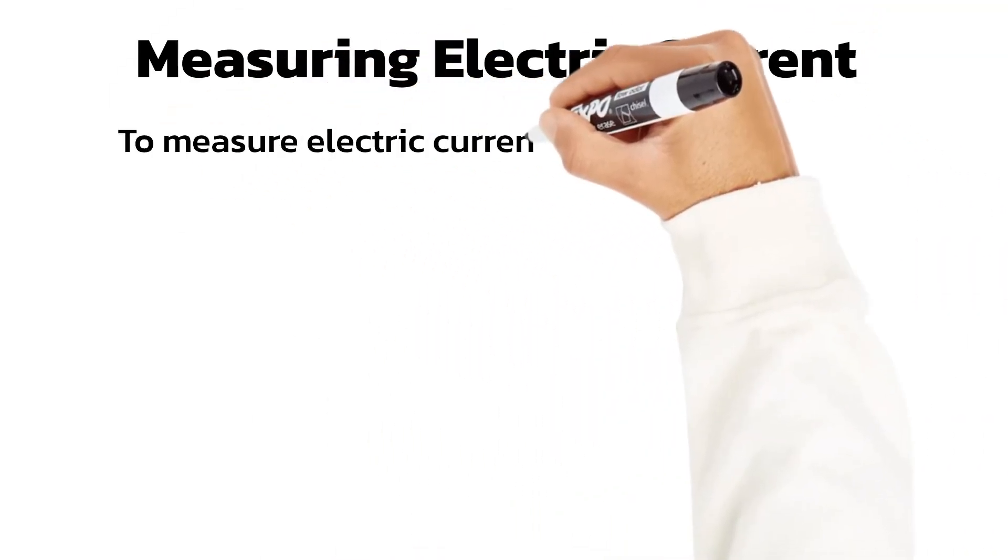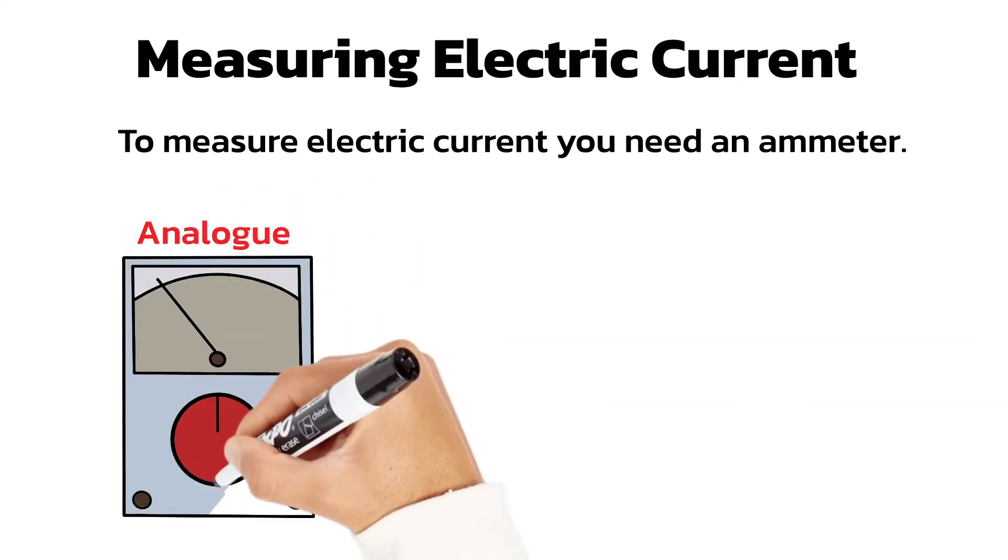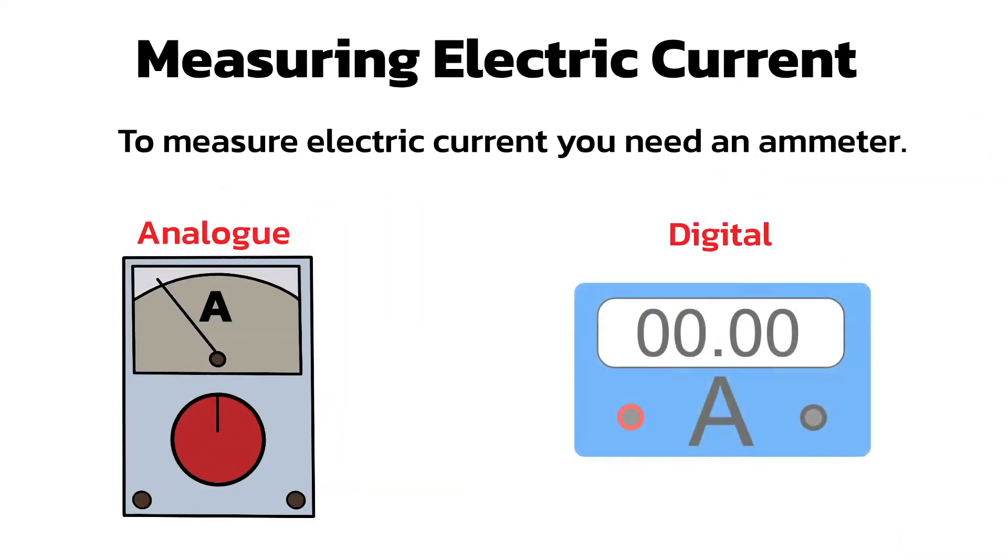To measure the electric current flowing in a circuit you need to use an ammeter. The two main types are called analog, which have a needle moving along a scale, and digital, which use an LCD readout.